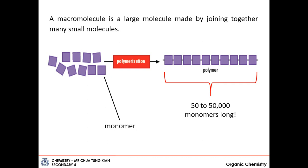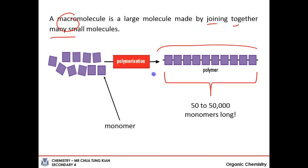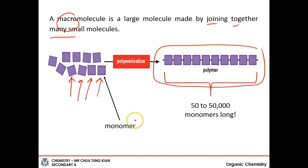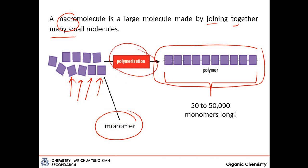First, let's touch on what is a macromolecule. Macro basically means large. So a macromolecule is a large molecule made by joining together many, many small molecules. This is the polymer or the macromolecule - it can be 50,000 units or so long, but it is made up of individual small units which we call monomers. When the monomers come together in a reaction called polymerization, we get the polymer.